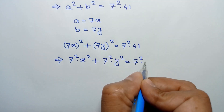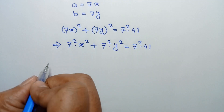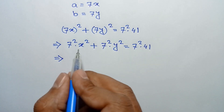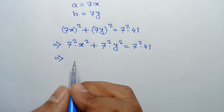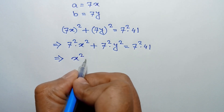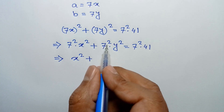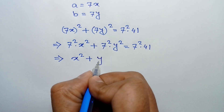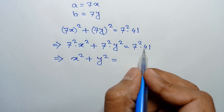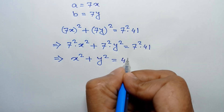Dividing both sides by 7², we get x squared plus y squared equals 41.